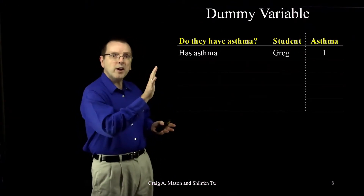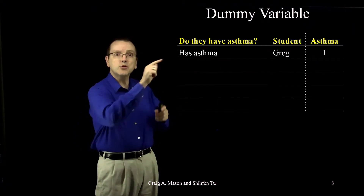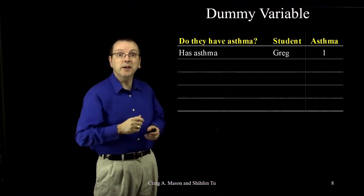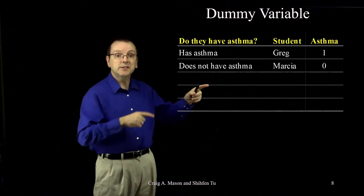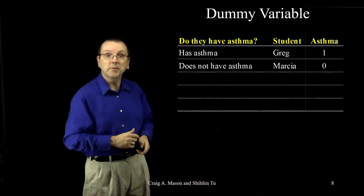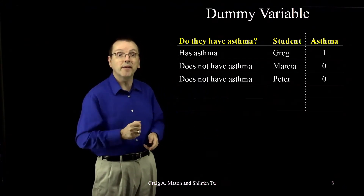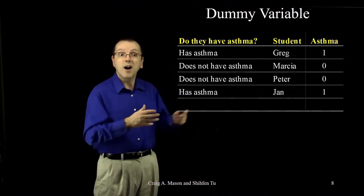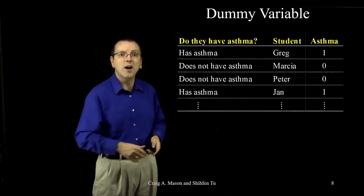Looking at the actual data, when we're making this variable it will look something like this table. Each row is one student. Greg is our first student and has asthma, so he has a value of one for the dummy variable 'asthma.' Marsha doesn't have asthma, so she has a value of zero. Peter also doesn't have asthma so he's coded zero, but Jan does have asthma so she's coded one, just like Greg. Then you just keep doing that all the way down for all of your students.